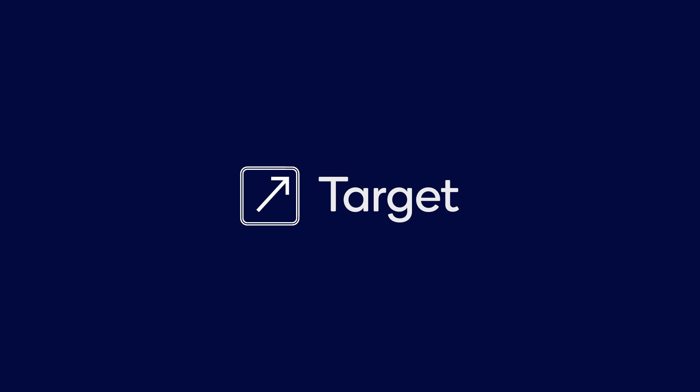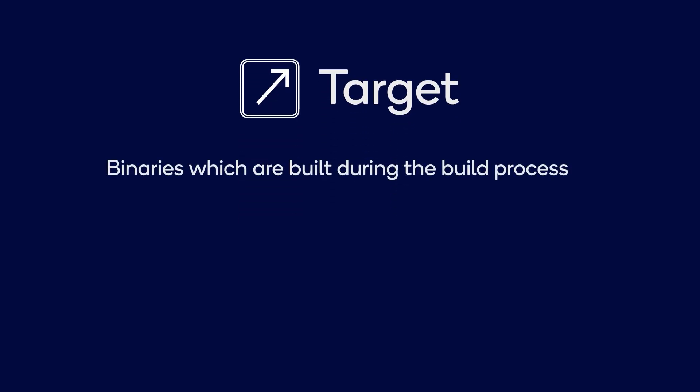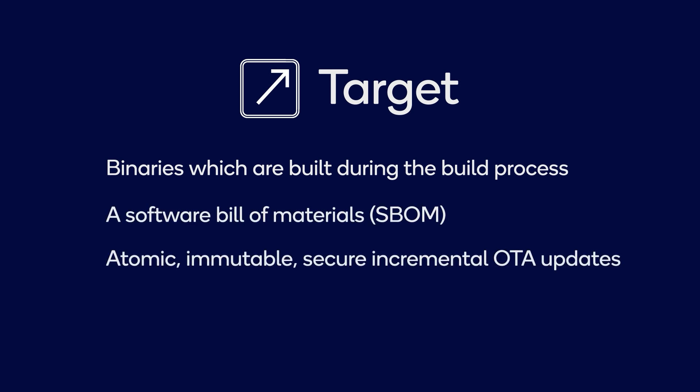Let's look at some important characteristics of the Foundries Factory. First, it is built upon a foundational unit called a target. Each target provides the following: binaries, which are built during the build process; a Software Bill of Materials, or SBOM; Atomic Immutable Secure Incremental OTA Updates; and a version list of the sources used to create the target. This provides software reproducibility.